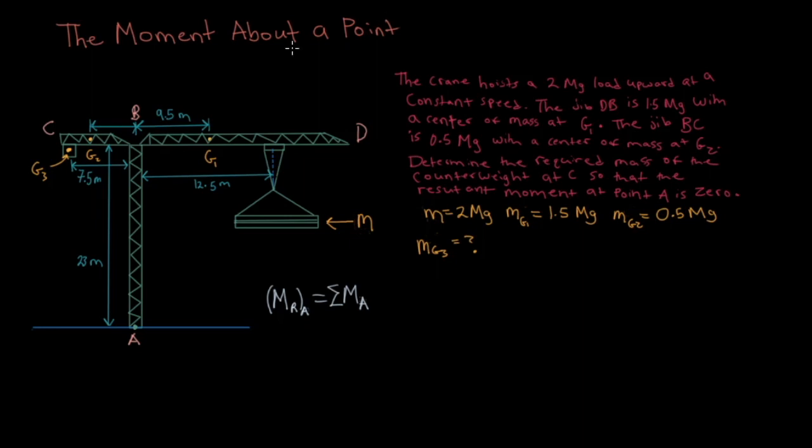In this example we have a crane, and the crane has four different masses that we're considering. Here, this jib called DB has its own mass which acts through its center of mass at g1, and it's hoisting a mass which we'll call m.